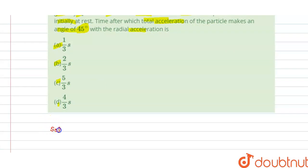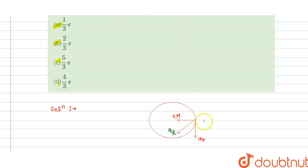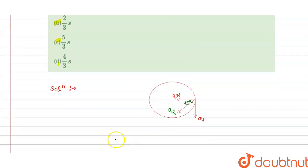The solution: this is circular motion of the particle. Suppose the particle moves in this circular path. The radial axis is in this direction — this is our ar (radial acceleration). The tangential acceleration at is in this direction. The resultant acceleration is in this direction, and the angle between them is given as 45 degrees.